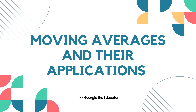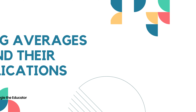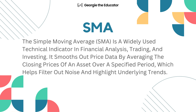The simple moving average (SMA) is a widely used technical indicator in financial analysis, trading, and investing. It smooths out price data by averaging the closing prices of an asset over a specified period, which helps filter out noise and highlight underlying trends.